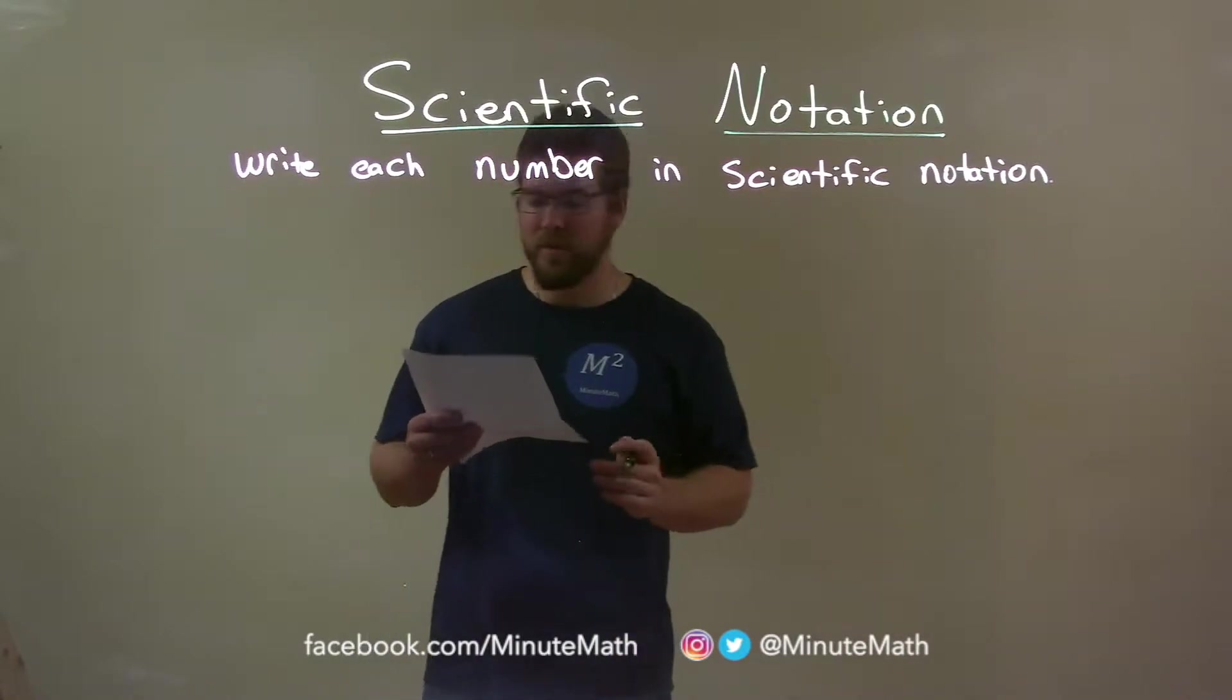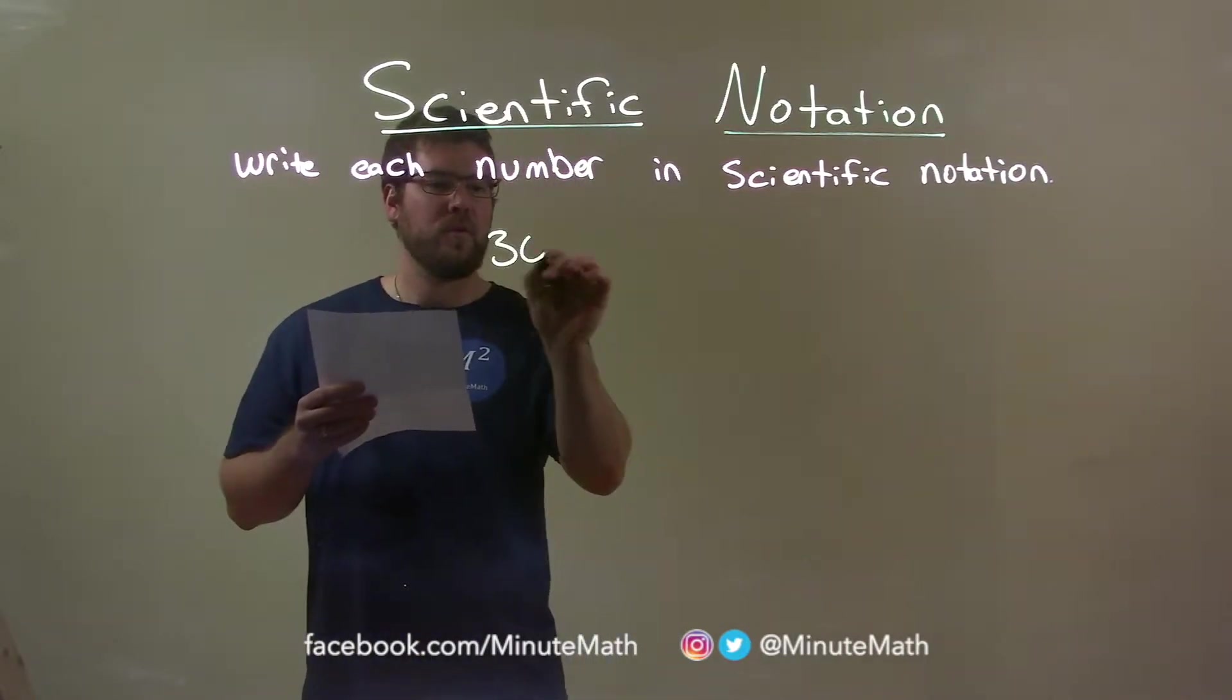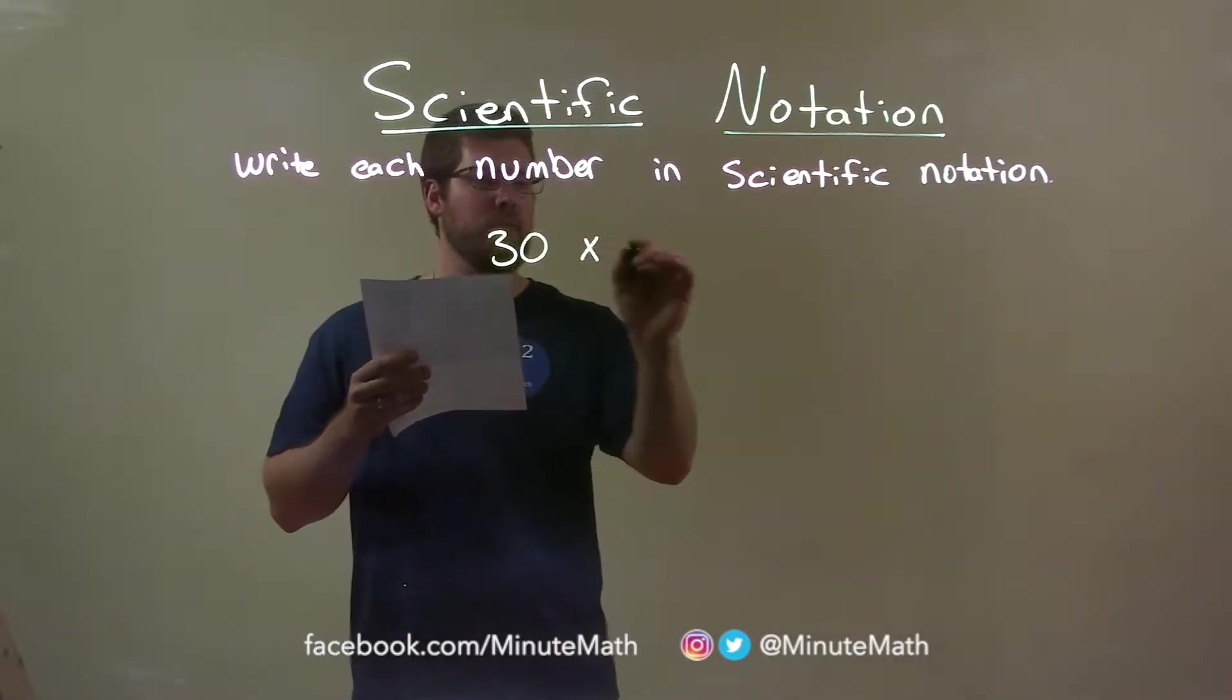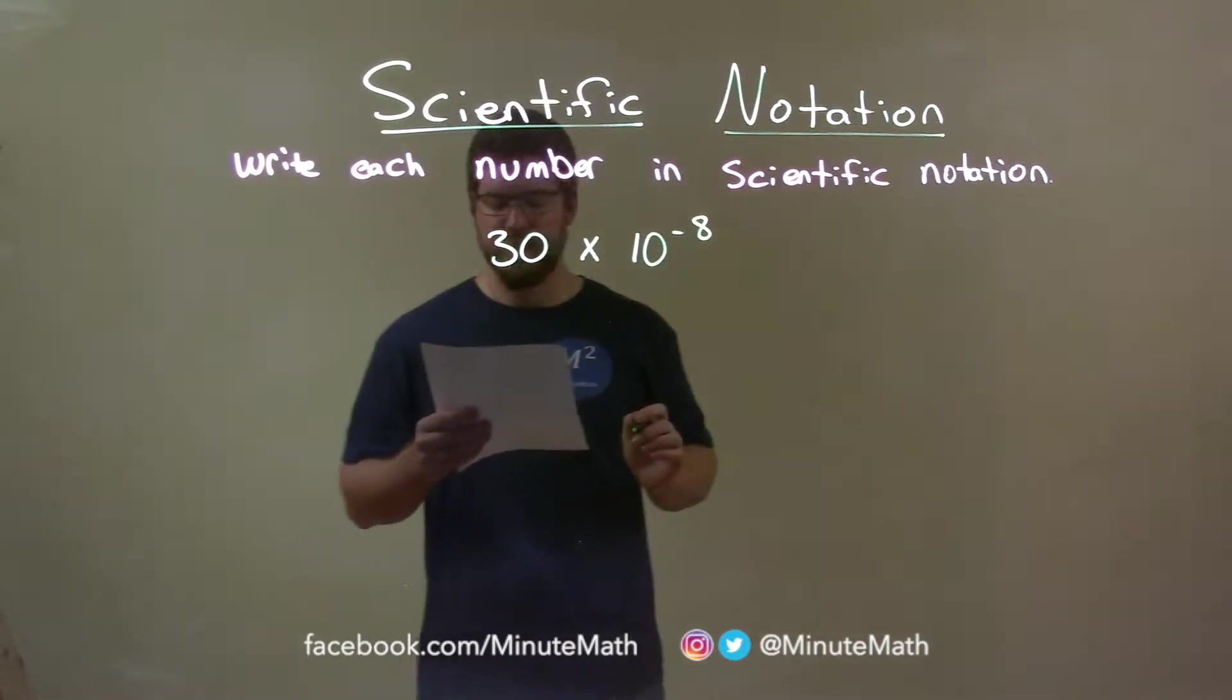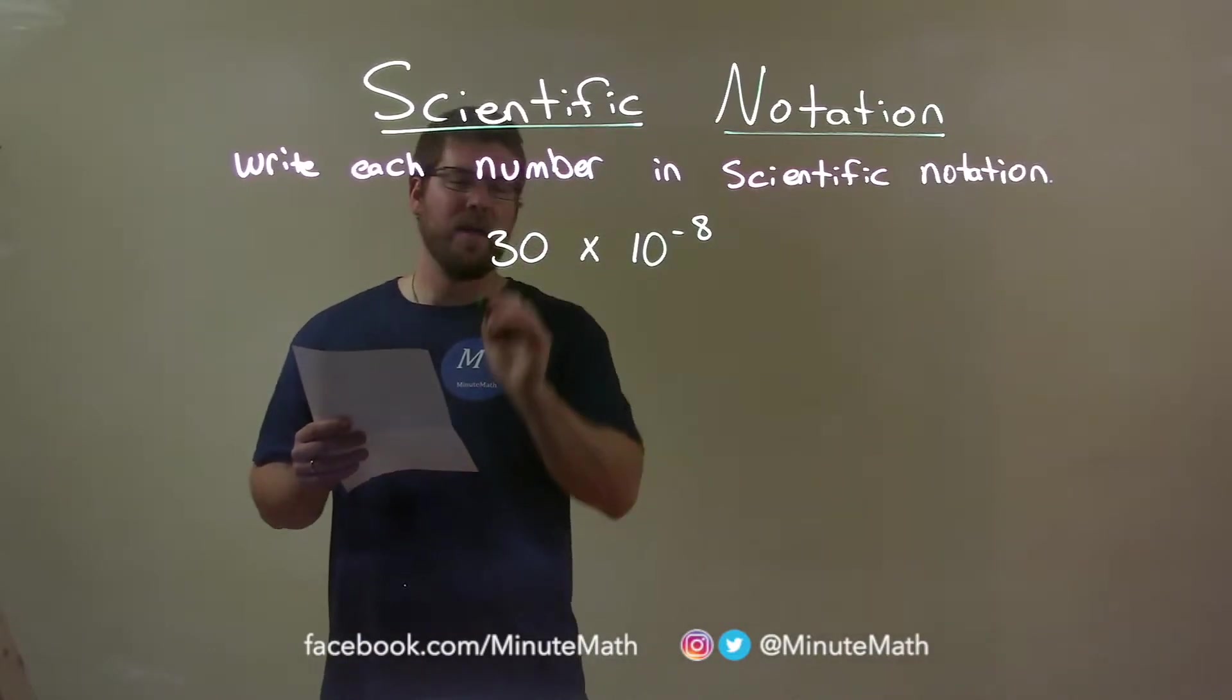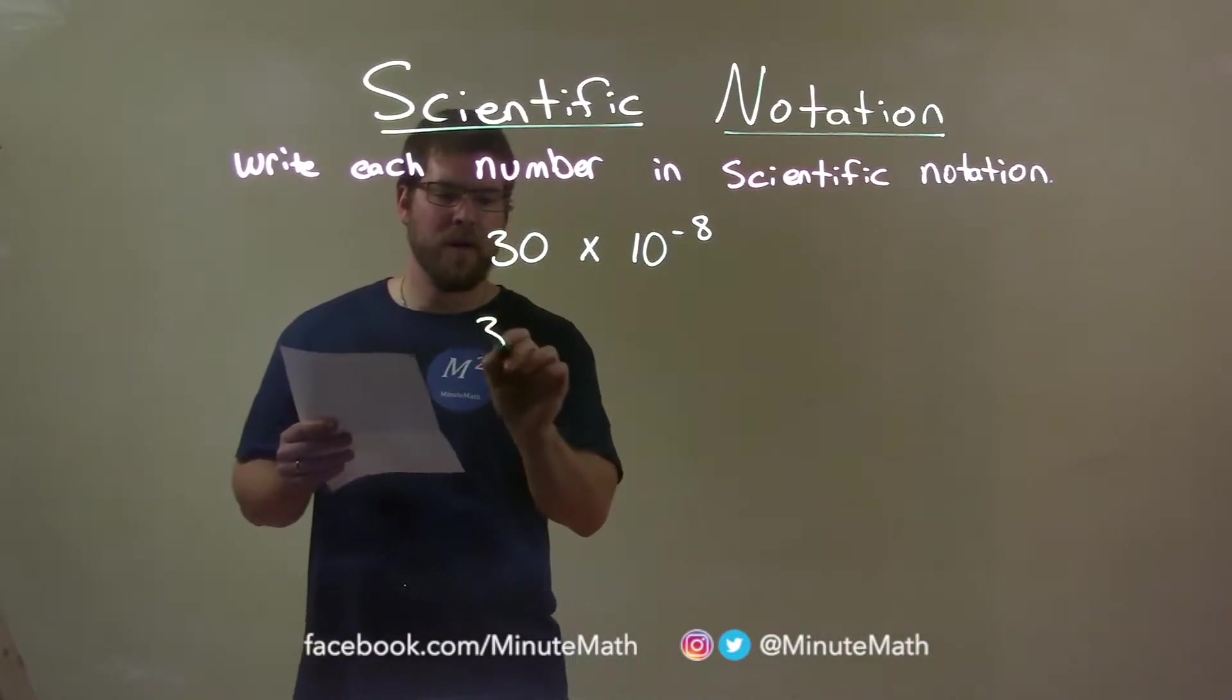If I was given this number, 30 times 10 to the negative 8 power. Well, what I like to do first is I take that 30, okay, and I'll rewrite it here.